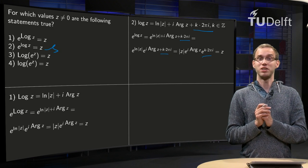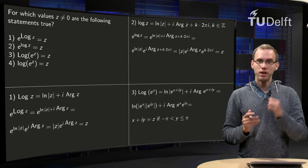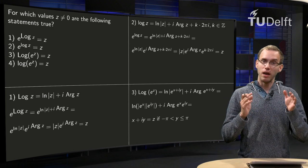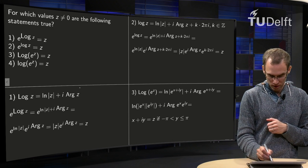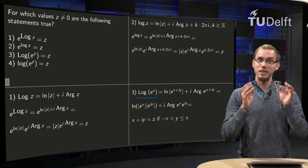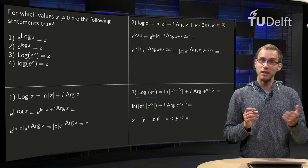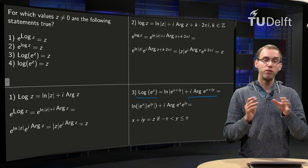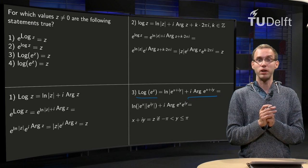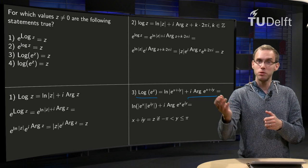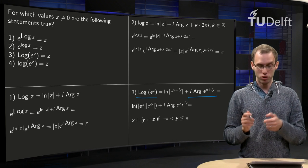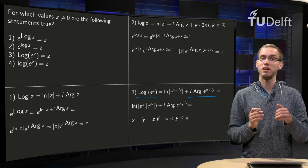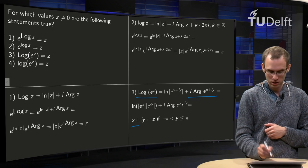Let's go to the third statement — here we have to be a bit more careful. We write z equals x plus iy, and then examine what happens to Log(e^z). We expand this as the ln of the modulus of e^(x+iy) plus i times the argument of e^(x+iy). The modulus of e^(x+iy) equals the modulus of e^x times the modulus of e^(iy). Since |e^(iy)| equals 1 and e^x is real and positive, we get ln(e^x) equals x — so that part is fine.